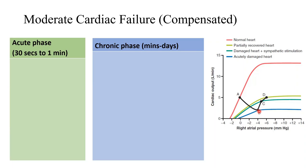Then something happened — acute phase compensation occurred. The curve moved from the blue line to a dark greenish line, and we now have a new point C. This is where the damaged heart was improved by sympathetic stimulation. Cardiac output improved, though right atrial pressure did not improve as much, because the heart is still in failure. This is the problem with heart failure: you have compensation that improves cardiac output somewhat, but it's not enough to clear the heart's backlog from the preload and the venous return coming in.